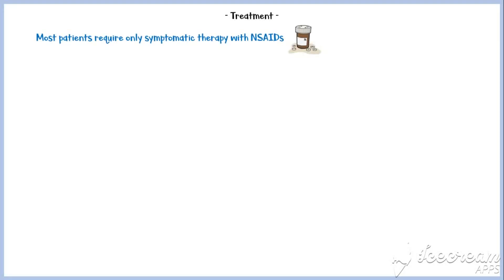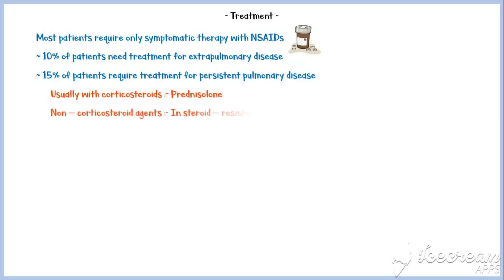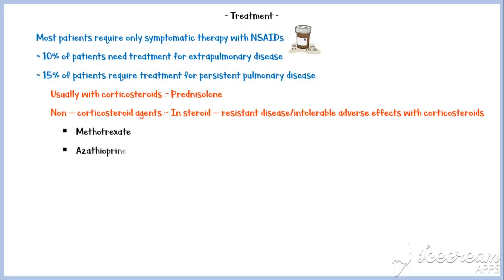Finally, let's discuss the treatment of sarcoidosis. Most patients require only symptomatic therapy with non-steroidal anti-inflammatory drugs. Approximately 10% of patients need treatment for extrapulmonary disease, and about 15% will require treatment for persistent pulmonary disease, usually with corticosteroids such as prednisolone. Non-corticosteroid agents are used in steroid-resistant disease or when the patient has intolerable adverse effects with steroids; these include methotrexate, azathioprine, cyclophosphamide, and infliximab.